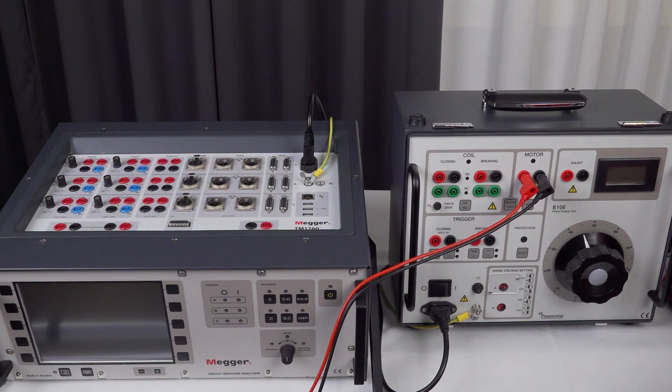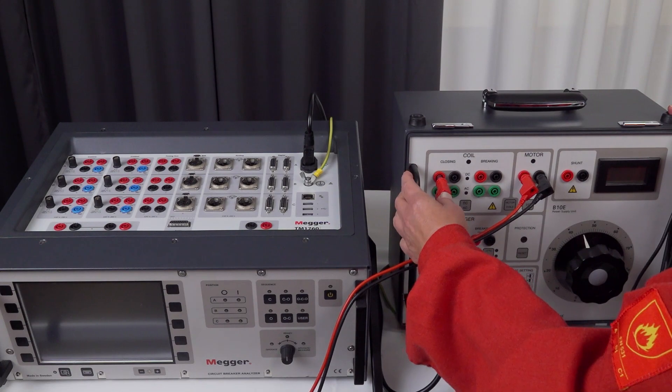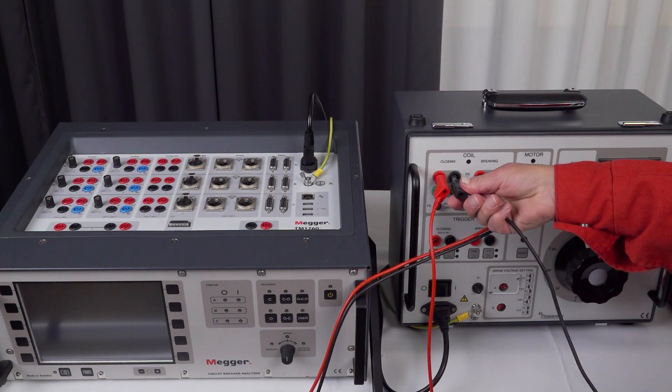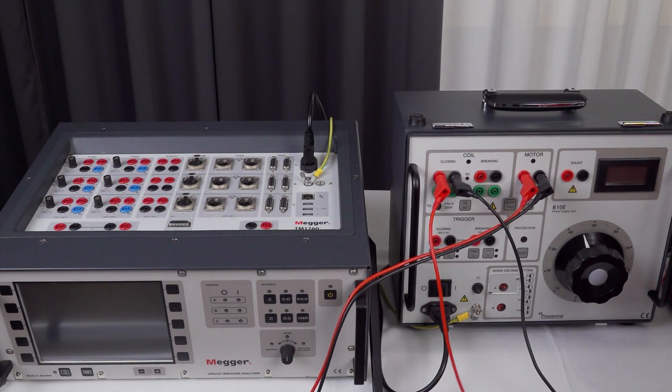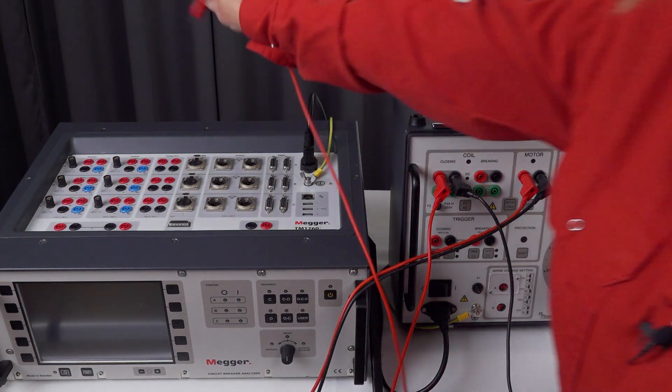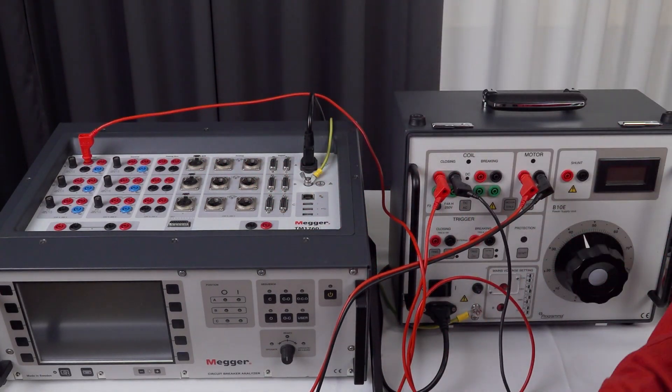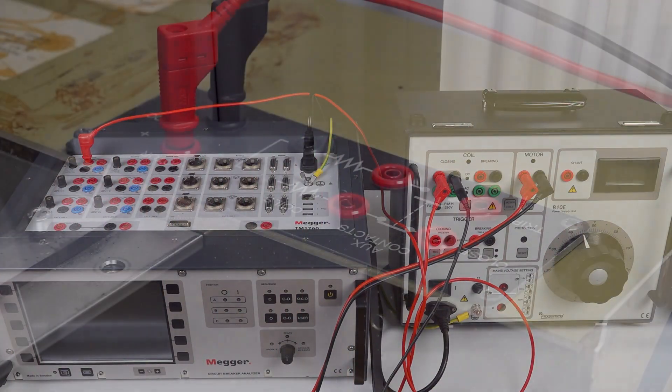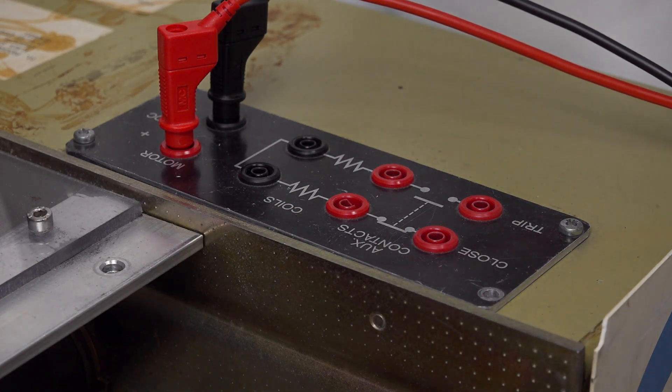I continue with connecting the supply for the coil, the plus and minus. The plus goes to the instrument, to the control and the minus goes to the object, the circuit breaker.